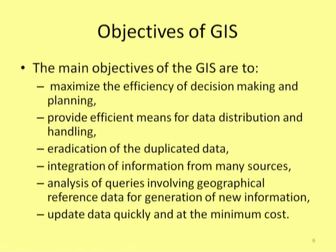Analysis of queries involving geographically referenced data allows generation of new information. GIS is mostly a geo-referenced tool — all data are geo-referenced, and any location entered into GIS has a certain geographical reference. While querying, we can retrieve geo-referenced data and generate new information based on all or part of the data. We can also update data easily; since data is in soft copy, deletion, alteration, or update is very easy and the cost involved is very low.